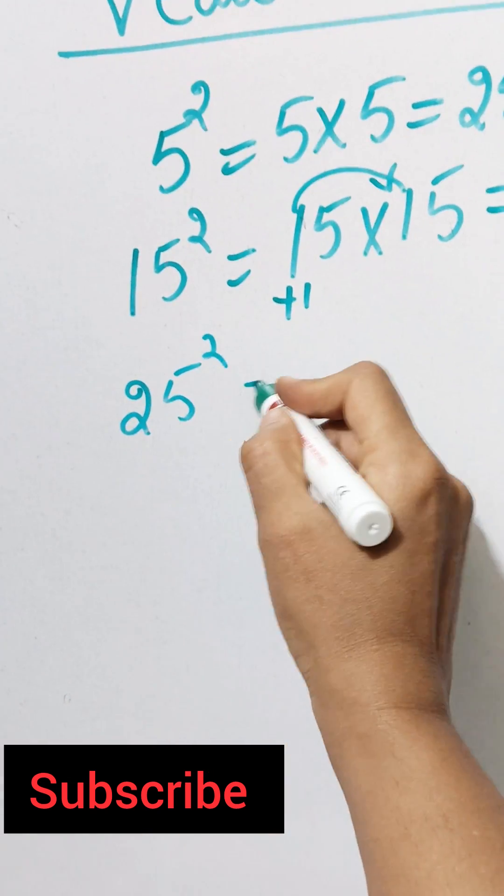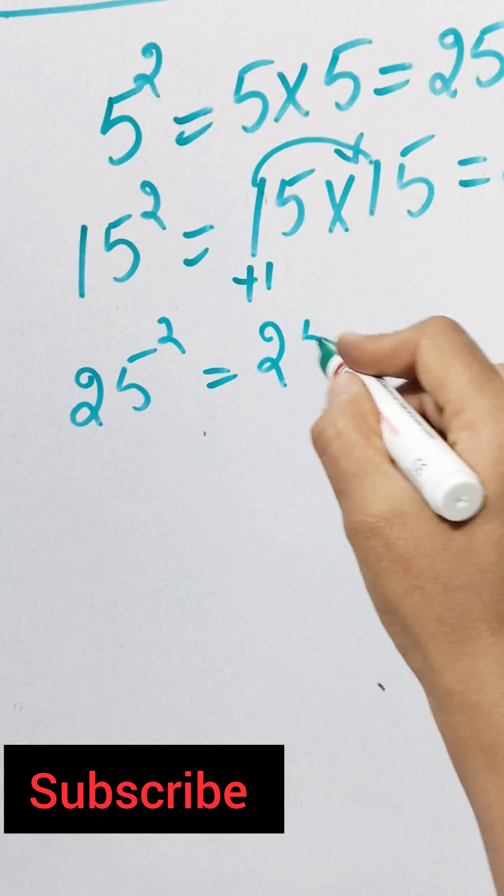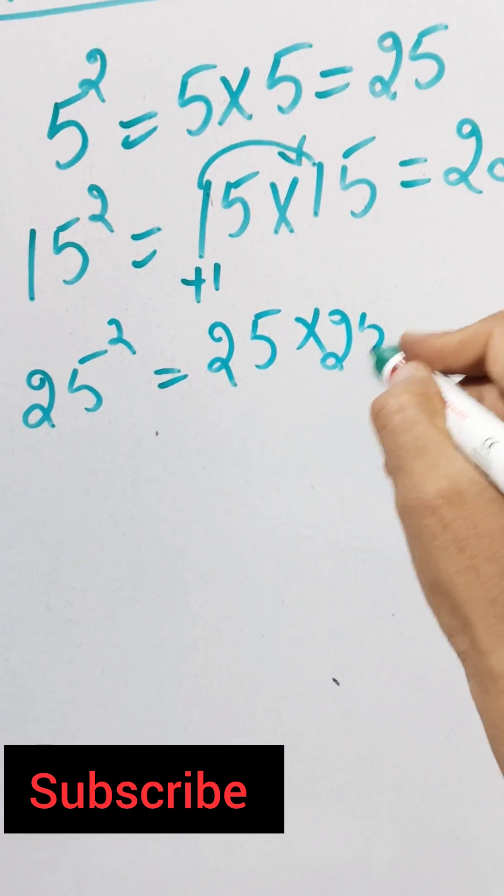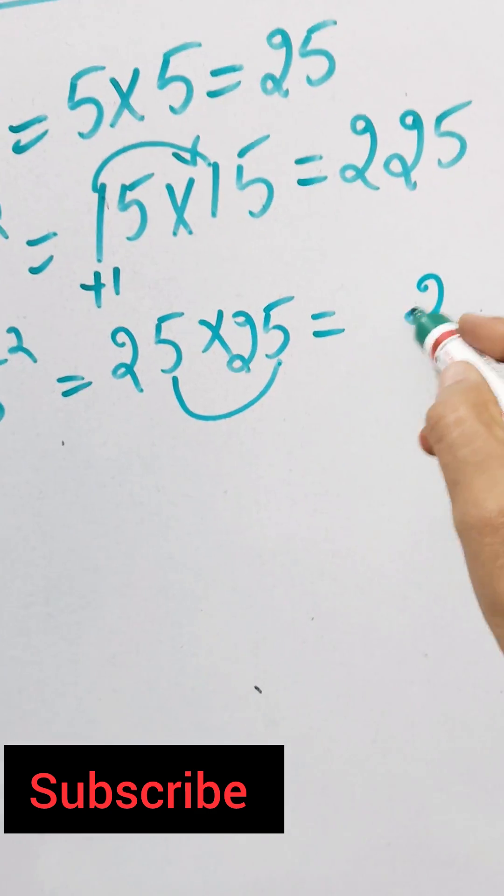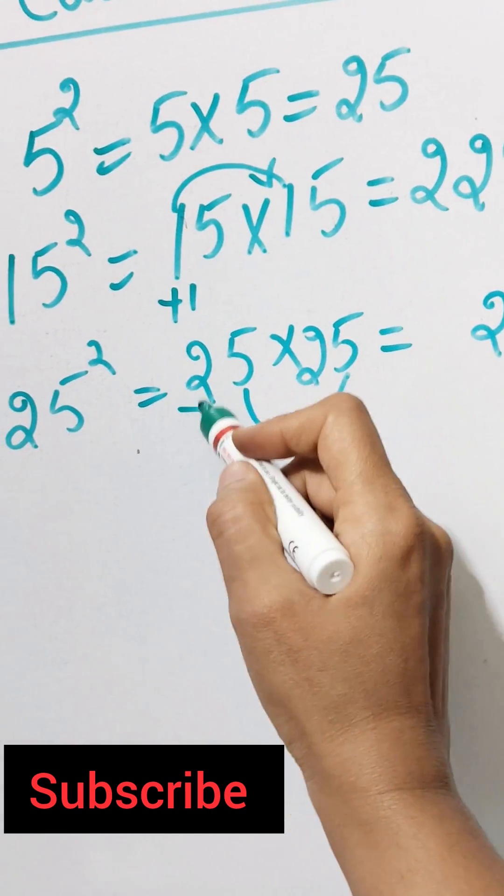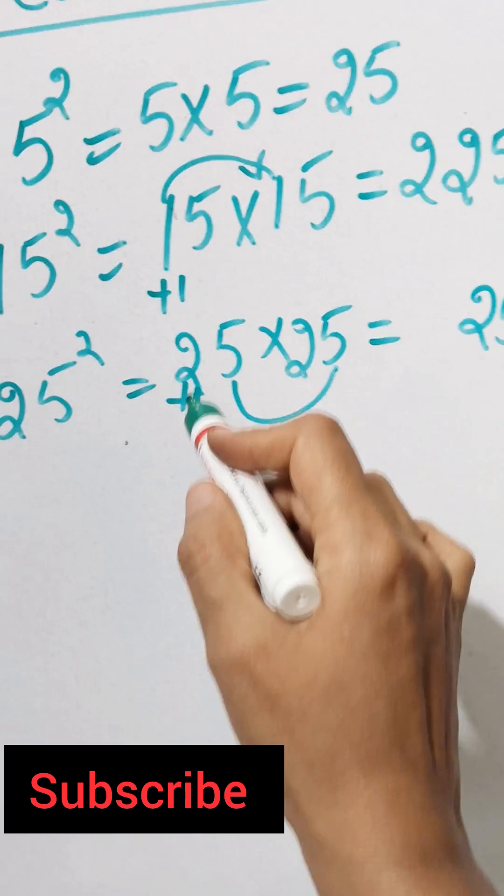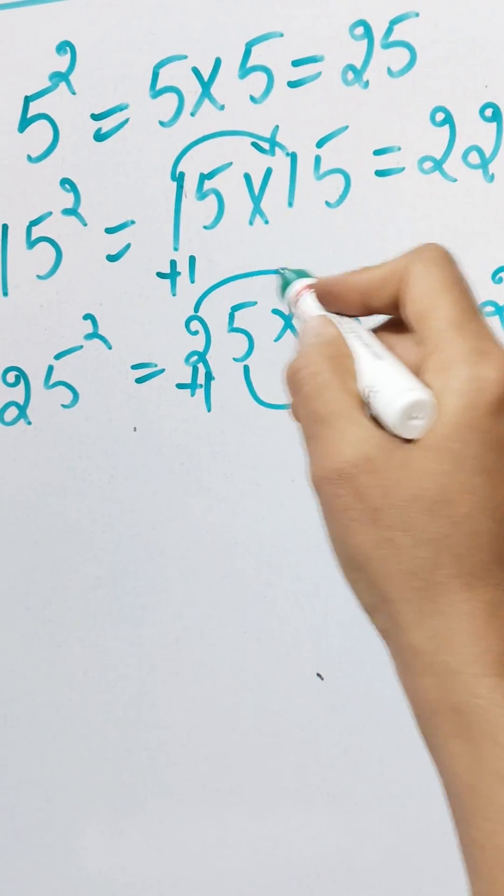Write 25 into 25. First multiply 5 and 5, which is 25. Now add 1 to this number, so 2 plus 1 is 3. Multiply 3 into 2, which is 6. So the answer is 625.